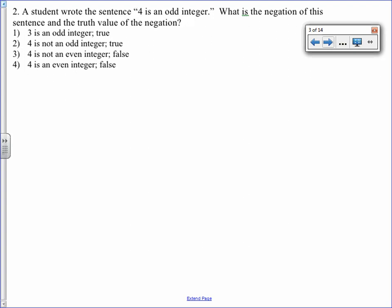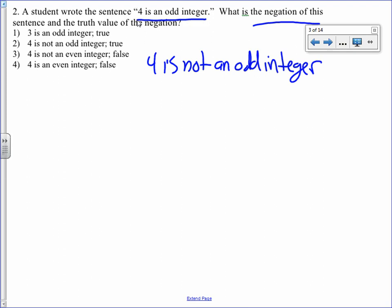The student wrote the sentence, 4 is an odd integer. What is the negation? Well, the negation is the opposite. The negation of 4 is an odd integer is 4 is not an odd integer. When it asks for the truth value, truth value means true or false. 4 is not an odd integer is true. 4 is not an odd integer, true, choice 2.